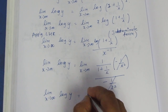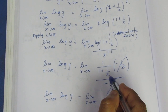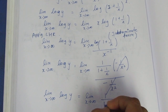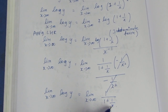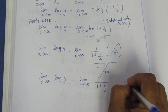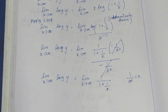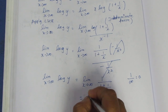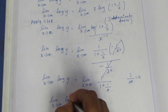After cancellation, we have limit x tends to infinity of 1 over (1 plus 1 by x). Now we substitute infinity: 1 by infinity is equal to 0, so 1 plus 0 equals 1. Therefore the limit value equals 1 by 1, which is 1. So log y equals 1.